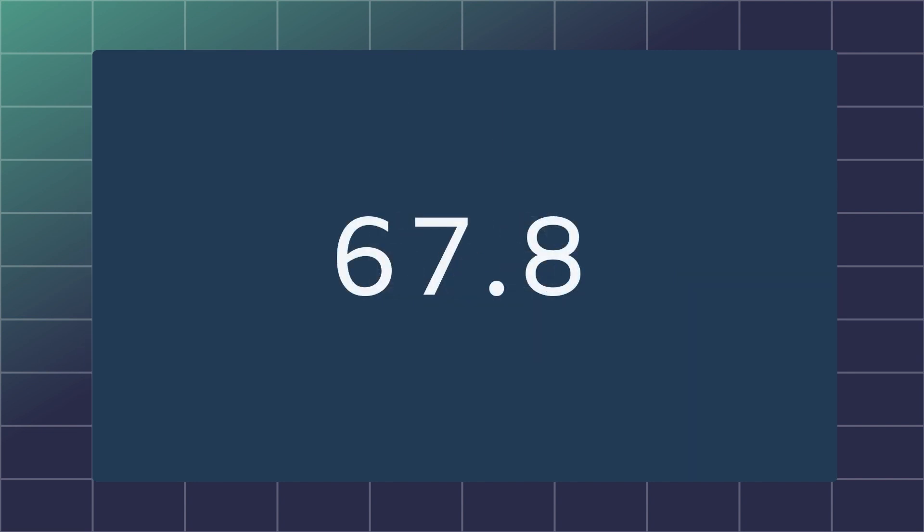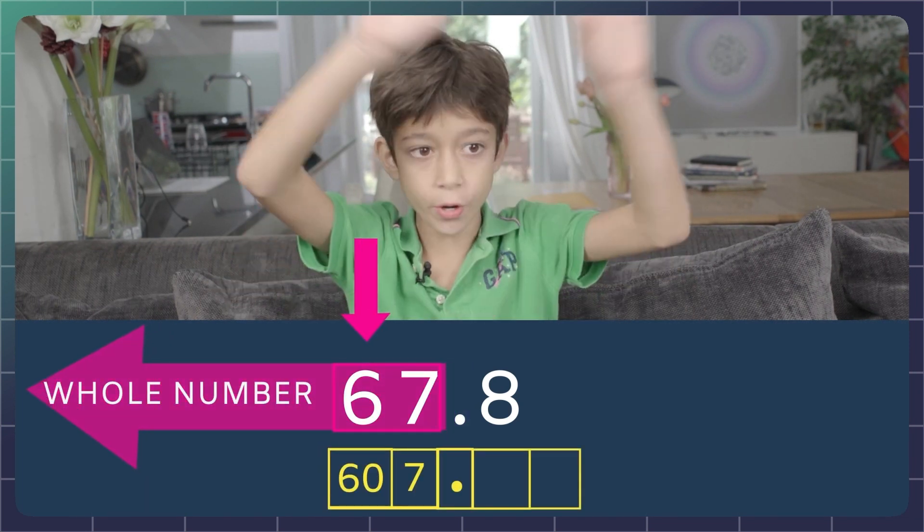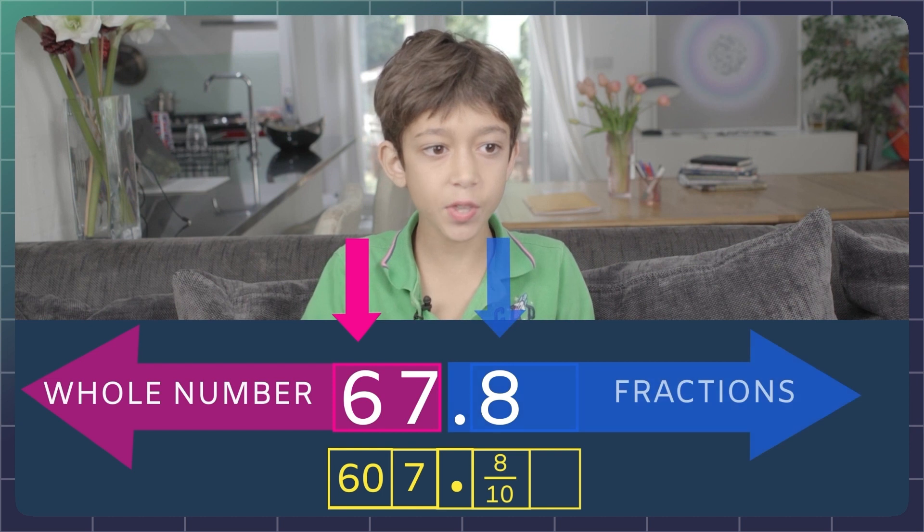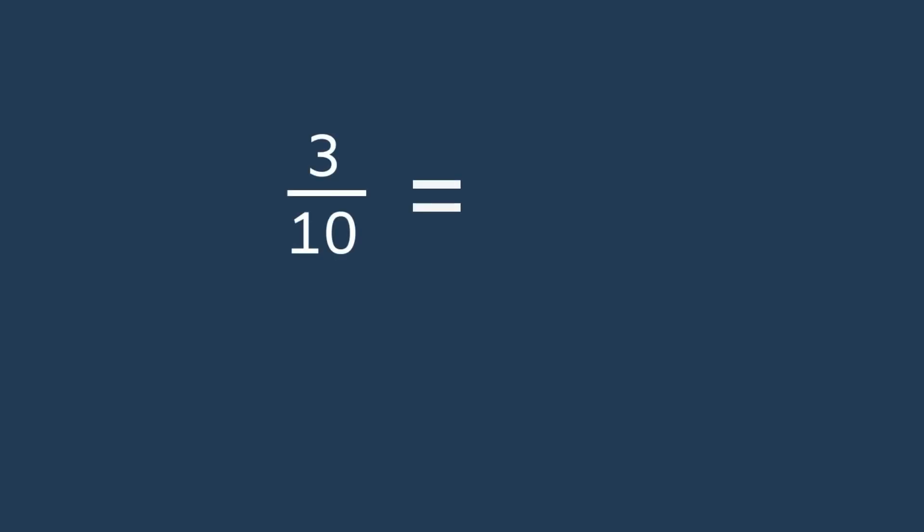But if we add a decimal point to this number, we have a whole number with a fractional part. All the numbers to the left side of the decimal point are whole numbers and everything to the right are fractions. These numbers are called base 10 numbers, like tenths, hundredths, thousandths, and ten thousandths.